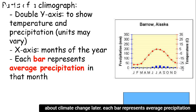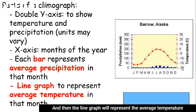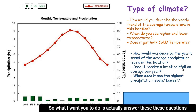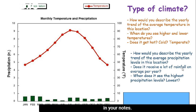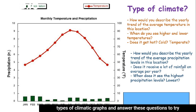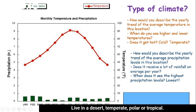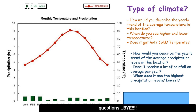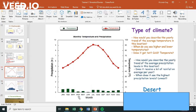Each bar represents average precipitation in that month, and the line graph represents average temperature in that month. I want you to answer the questions in your notes, looking at two different climatographs and trying to figure out what kind of climate zone each represents — desert, temperate, polar, or tropical. That completes this lesson. I hope you have a great rest of your day, and don't forget to complete your notes and answer those questions. Bye!